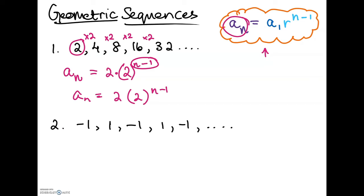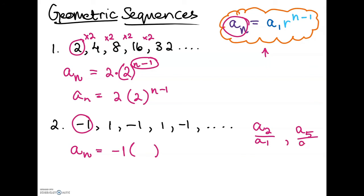Now for our next question we have the sequence negative 1, 1, negative 1, 1, negative 1, and it goes on. You can tell it's alternating between positive and negative, and all the values are 1 because you're multiplying by something that results in the same magnitude. Let's input all our values into the formula. a of 1 in this case is negative 1. To find r, we take the second term divided by the first term — or the quotient of any two consecutive terms.